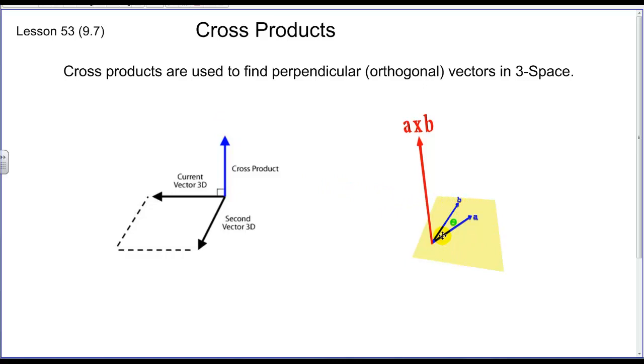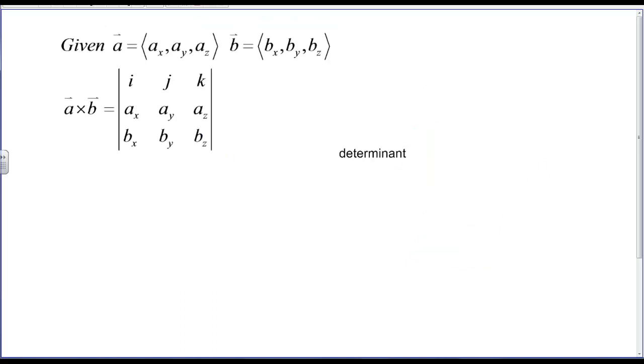Likewise here, here's a flat plane in the beige with two vectors, a and b, and then there's a vector perpendicular to that plane coming up and out of the page, if you will, and that represents a cross product. Now in order to find a cross product of two vectors, we actually take and find the determinant of the vectors a and b with their unit vectors i, j, and k.